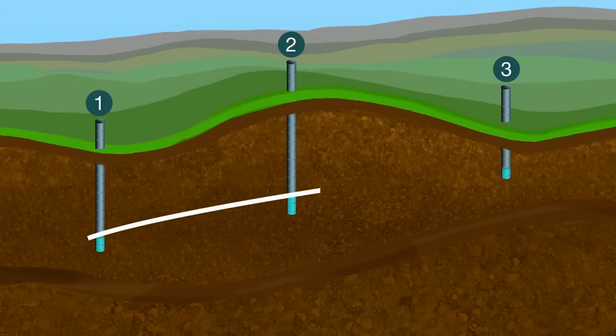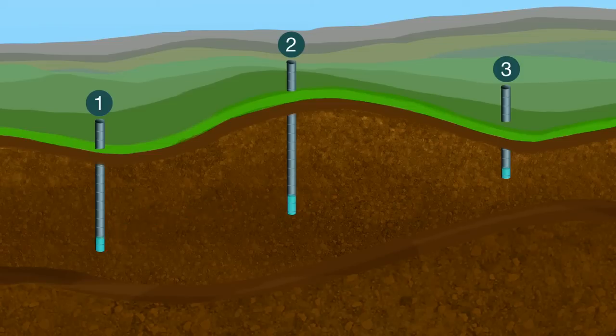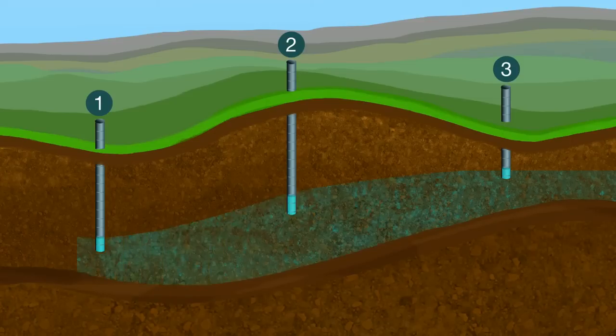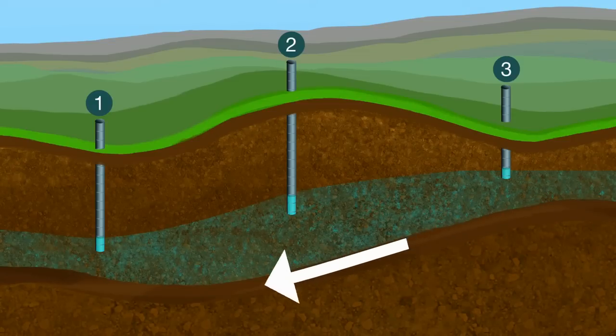We know that water flows from high ground to low, and that's easy to see on the surface. Under the earth's surface, groundwater also flows from higher elevations to lower elevations in the direction of maximum change, but we can't see it.